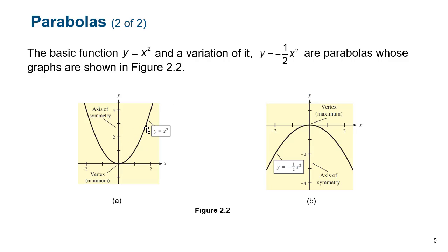From that basic parabola, we can augment it — we can stretch it, compress it, shift it, or flip it. We can do all these transformations to get other ones. This one has been flipped vertically, and that's what the negative in front of it does — it flips it vertically so now it points down. And because this constant is between 0 and 1, it's a fraction smaller than 1, so it grows slower, which means it looks wider — almost like we've stretched it horizontally.